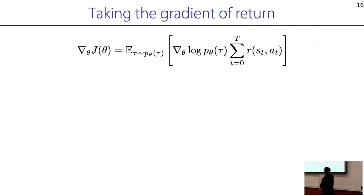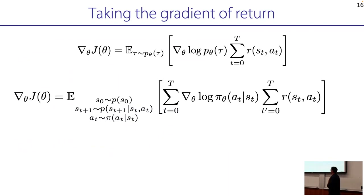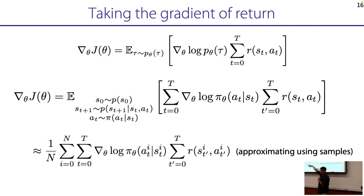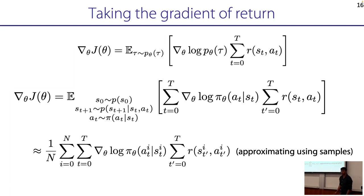So your overall gradient simplifies: grad-theta log P-theta-tau becomes just the sum of grad-theta log pi-theta of a-t given s-t, with no dynamics or initial state distribution terms. Your gradient estimator is then the expectation of the sum over t of grad-theta log pi-theta times the sum of rewards R of s-t, a-t from 0 to T. When you estimate this with samples, you take one over N times the sum over N trajectories, then sum from t=0 to T of grad log pi times the sum of rewards. That's your policy gradient estimator.